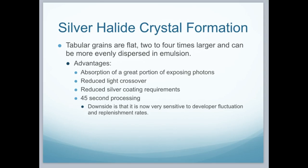These silver halide crystals are tubular grains that are flat — two to four times larger than other crystals that have been used, and can be more evenly dispersed in emulsion. The advantages include the absorption of a great portion of the exposing photons, reduced light crossover, reduced silver coating requirements — saving money — and 45-second processing, which is fast. The downside is that they are very sensitive to the chemicals in the processor, and we will see the importance of that chemistry as we talk about the processor.